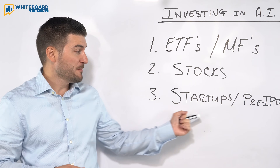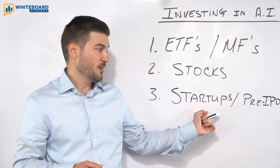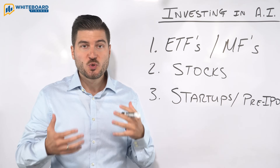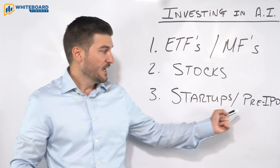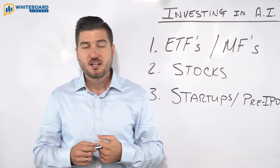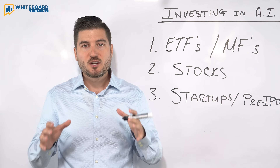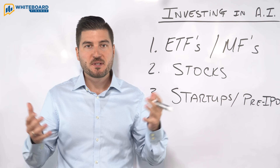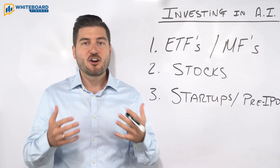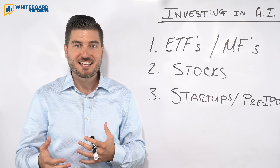And finally, we have startups and pre-IPO companies. Startup companies are new companies, especially in a new and exciting field like AI. Pre-IPO stands for pre-initial public offering — essentially private companies. These companies typically get funding from venture capital and aren't usually easily accessible to the general public to invest in.